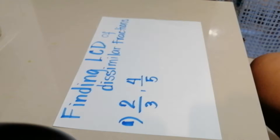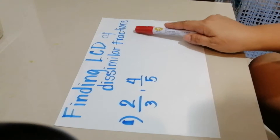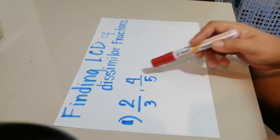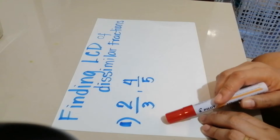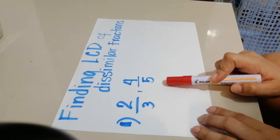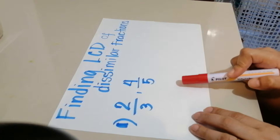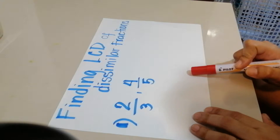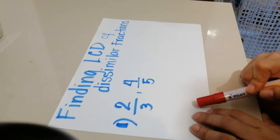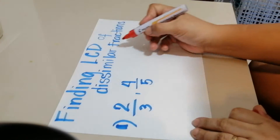I taught another way to find the LCD, or how to make the denominator the same. So this time, we'll focus on changing dissimilar fractions. When we say dissimilar fractions, these are fractions with different denominators. We need to make the two denominators the same in order to add the fractions.